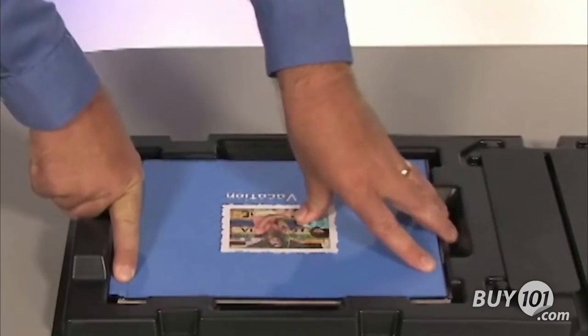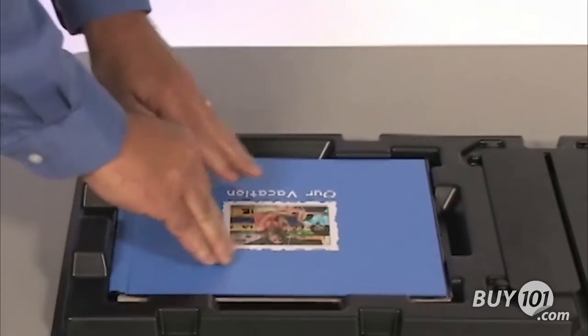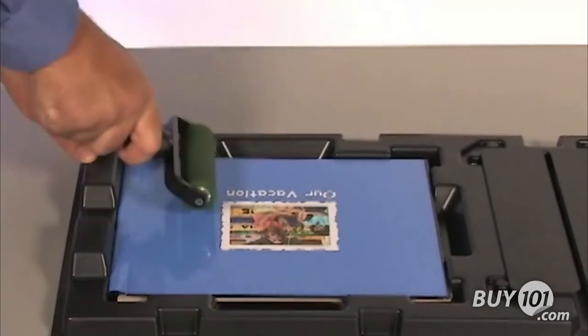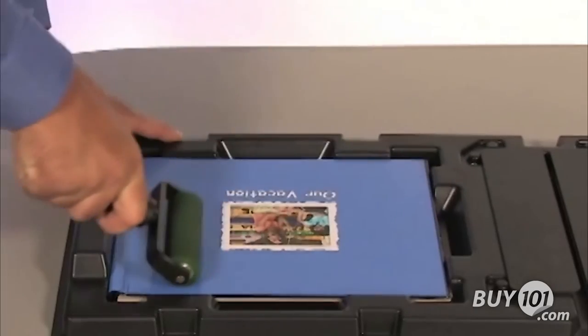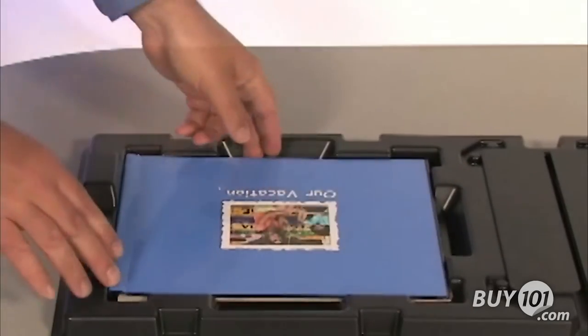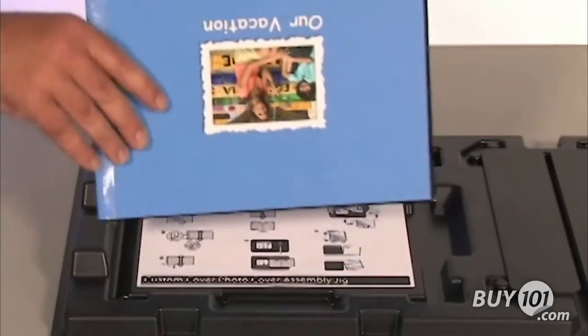Firmly press the cover onto the adhesive working from the center outwards. Roll over the cover firmly with the four inch roller, working from the center outwards. Flip the cover over and repeat the steps.